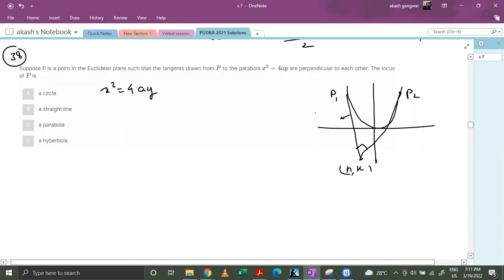So we will try to find out the equation of this tangent. These points are x1, y1. This is x2, y2.